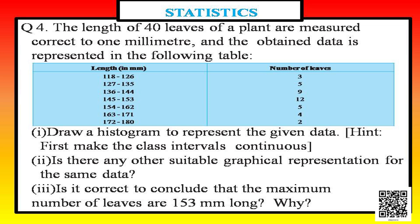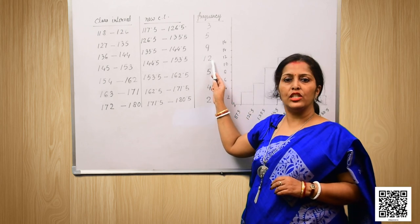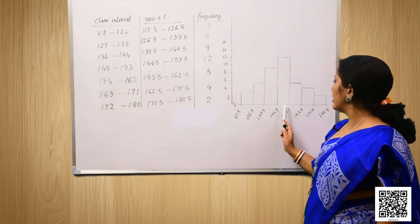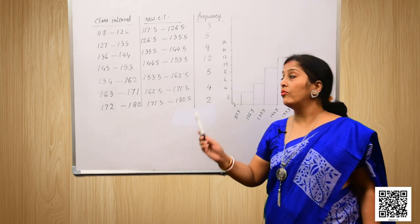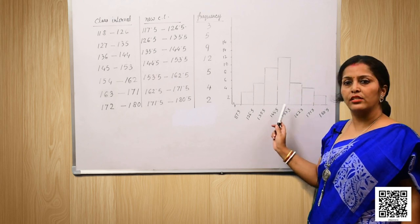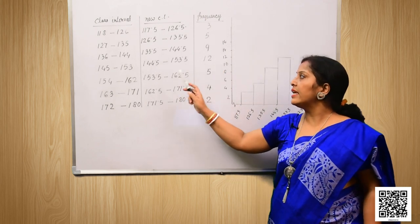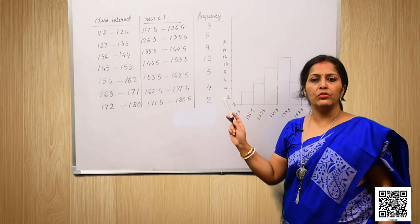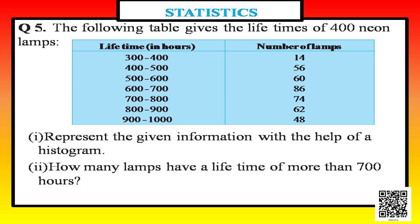Bit 3 says: is it correct to conclude that the maximum number of leaves are 153 millimetres long, and why? The highest frequency is 12, which falls in the class interval 145 to 153. So we can say the maximum number of leaves are in this range. However, since 153 is the upper limit of the class and is not included, we cannot conclude that the maximum number of leaves are exactly 153 millimetres long.